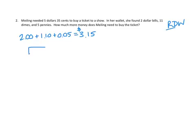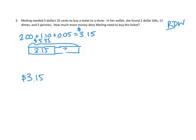So Mei Ling started off with $3.15. But she needs a total of $5.35 in order to get to the show. So what we're interested in is this amount right here. How big is this amount? How much more does she need?